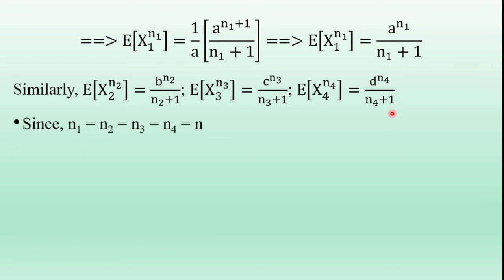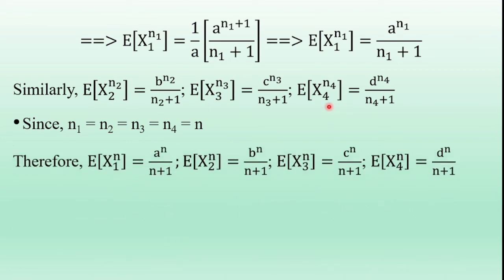Since n1, n2, n3, and n4 are all considered equal to n, substituting n1 = n2 = n3 = n4 = n, we get: E[x1^n] = a^n / (n+1), E[x2^n] = b^n / (n+1), E[x3^n] = c^n / (n+1), and E[x4^n] = d^n / (n+1).